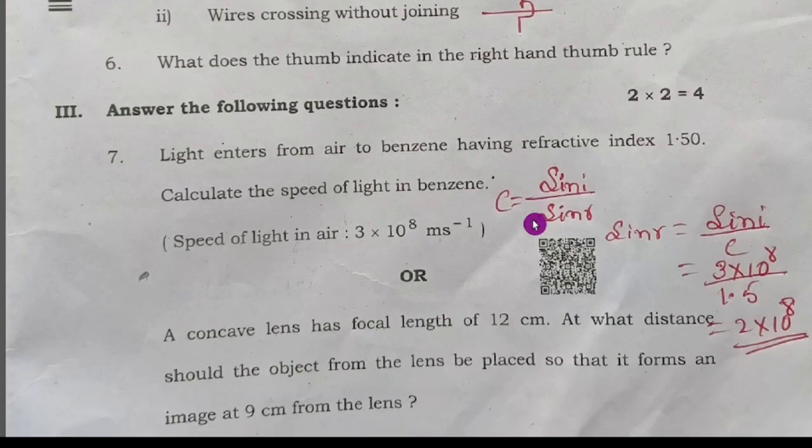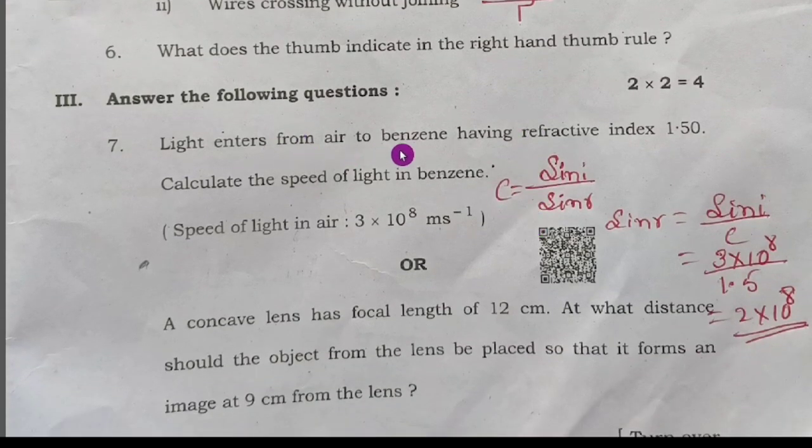Next, third main question. Seventh question: light enters from air to benzene having refractive index 1.50. Calculate the speed of light in benzene. We have c equals sin i by sin r, so sin r equals sin i by c.